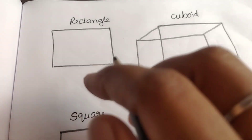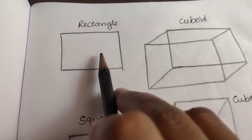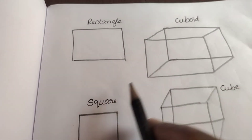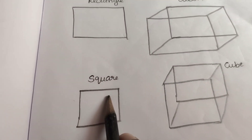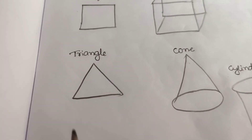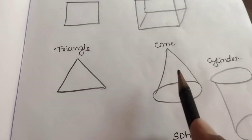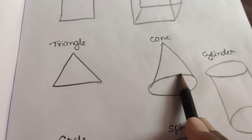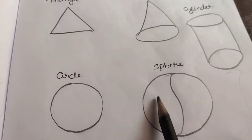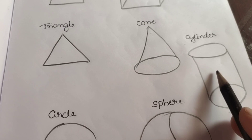Let's look at the rectangle — this is a two-dimensional figure. Cuboid is a solid figure. This is a square — also a plain figure. Cube is a solid figure. This is a triangle — a plain figure. Cone is a solid figure. Then circle — this is a plain figure. Sphere is a solid figure. One more solid figure is cylinder.